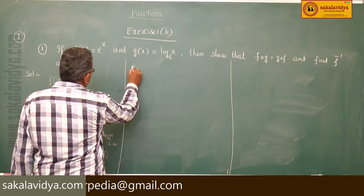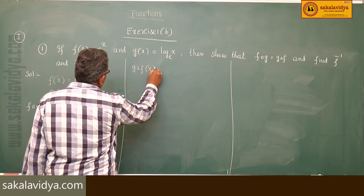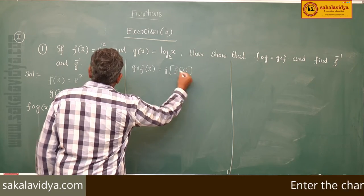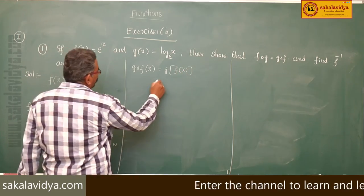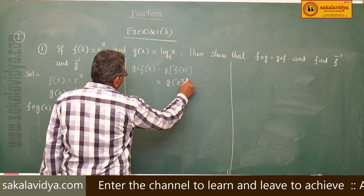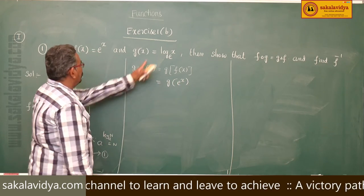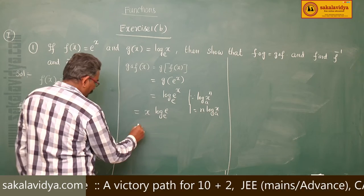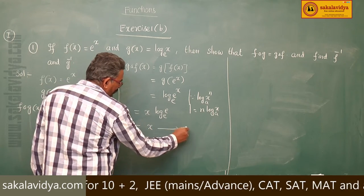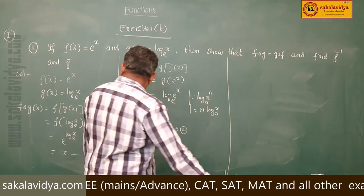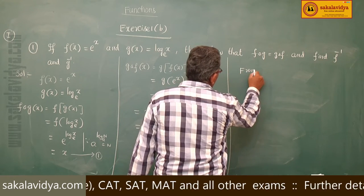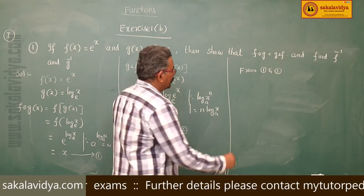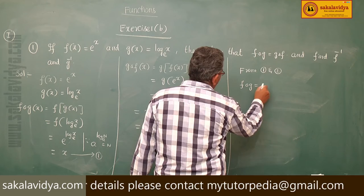Now g∘f(x) = g(f(x)). Since f(x) = eˣ, we get g(eˣ) = log(eˣ) to base e = x · log e base e = x · 1 = x. This is equation 2. From equations 1 and 2, we observe that f∘g = g∘f. Hence it is proved.